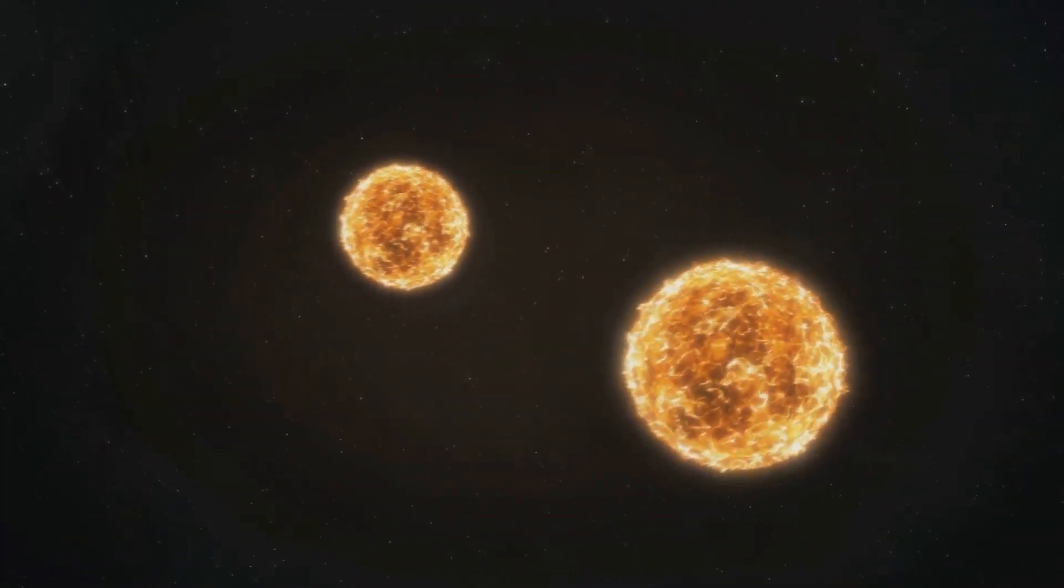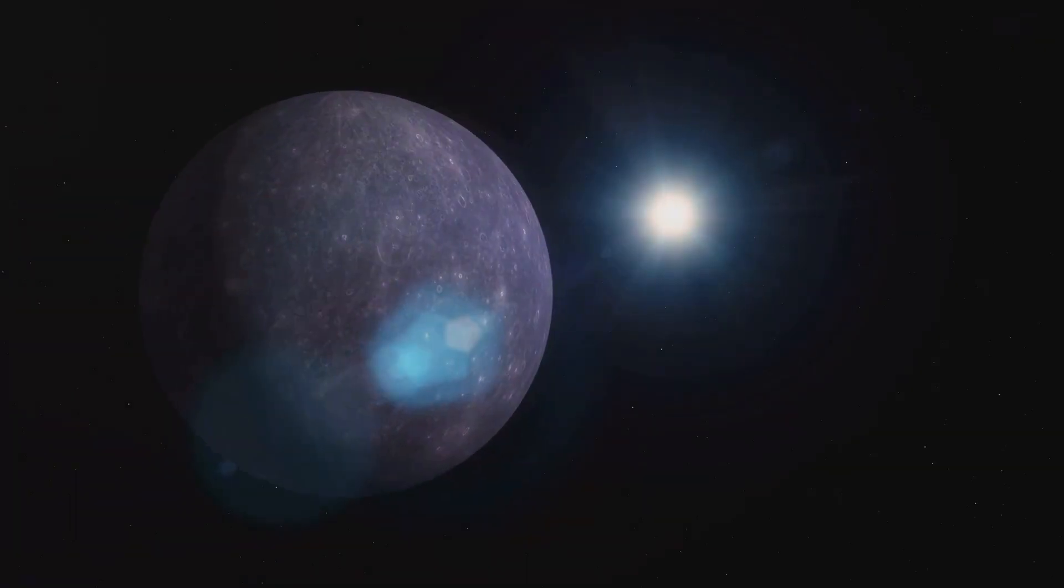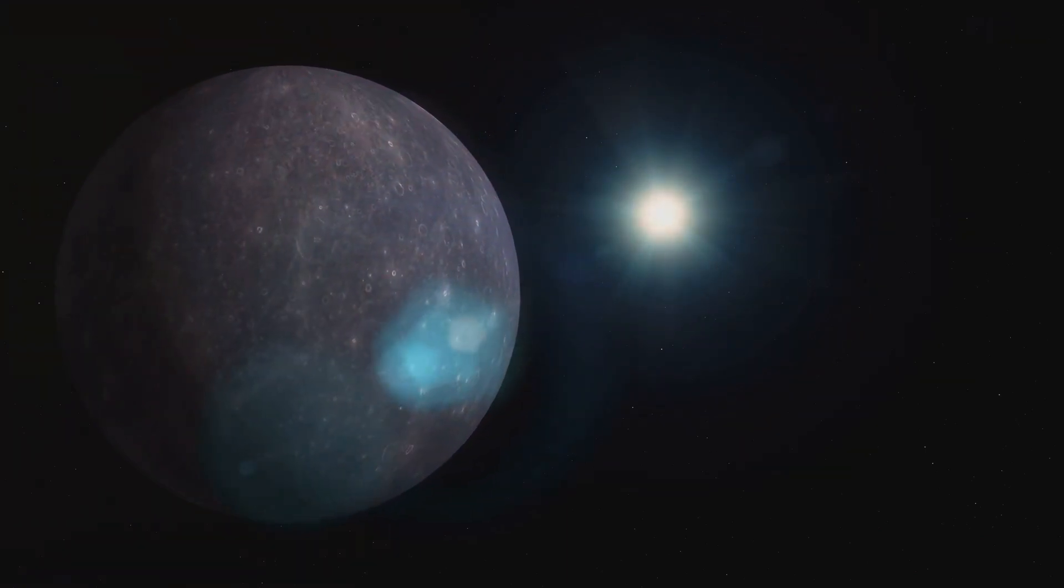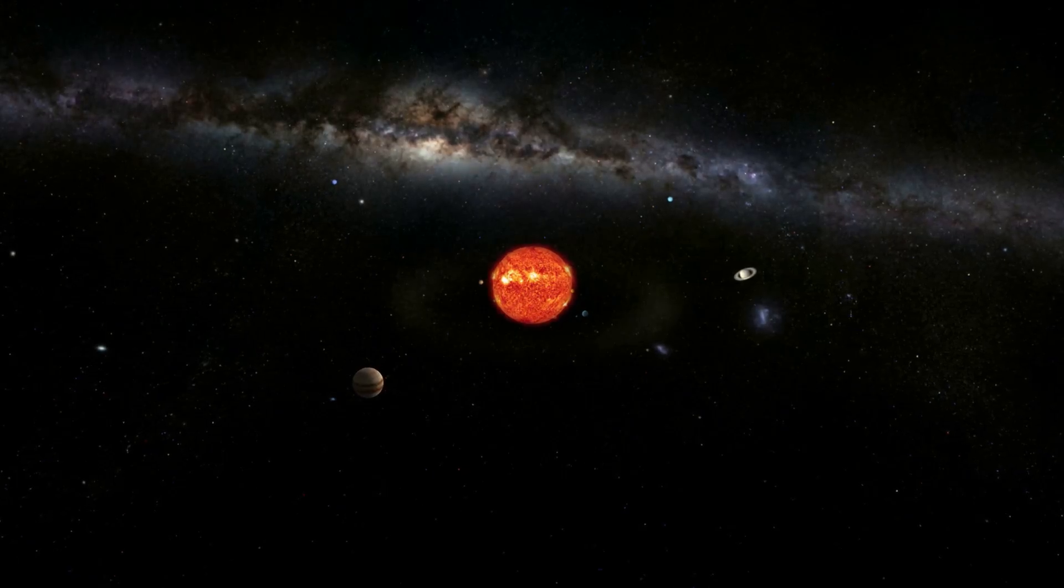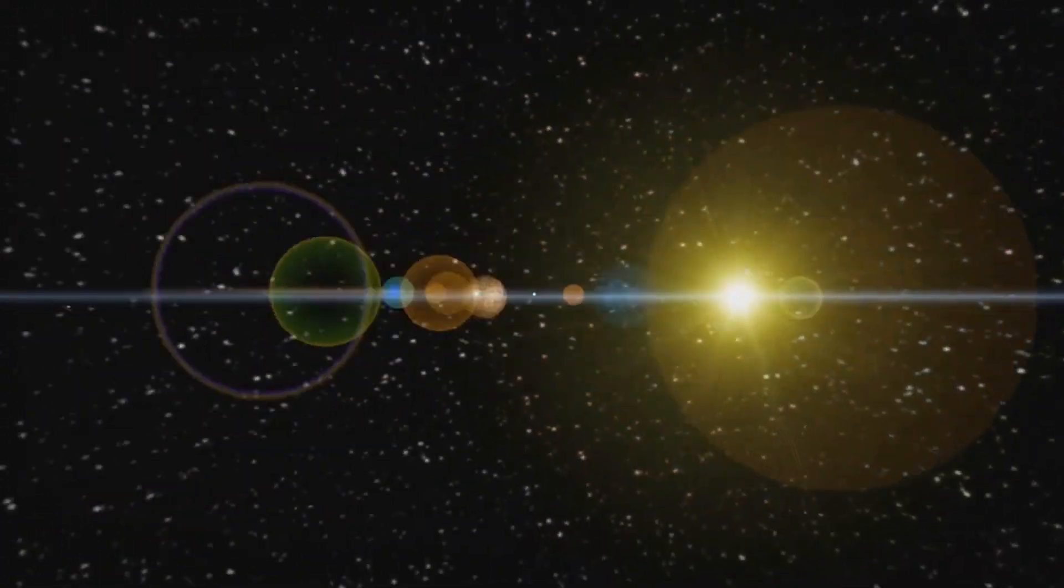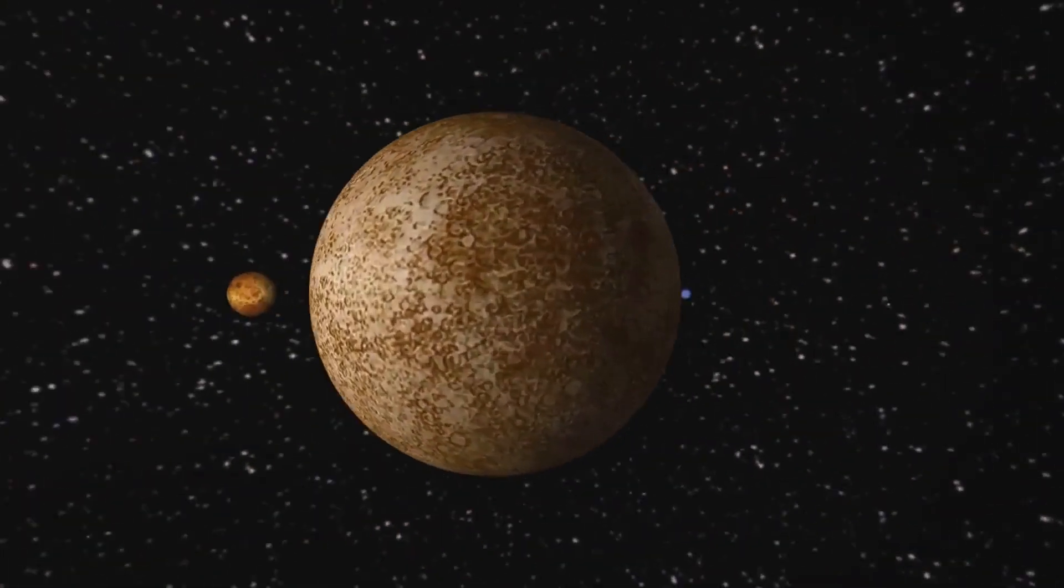This concept isn't as alien as you might think. In fact, astronomers estimate that up to half of the stars we see in the night sky could be binary systems. But what does that mean for us? How would our solar system and life as we know it be affected if our sun had a stellar companion?